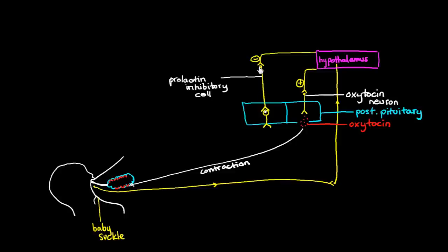So this is the prolactin inhibitory neuron, and its message is to say, don't make prolactin. I'll tell you what prolactin does in a minute. So obviously, this is our prolactin making cell, our prolactin cell.